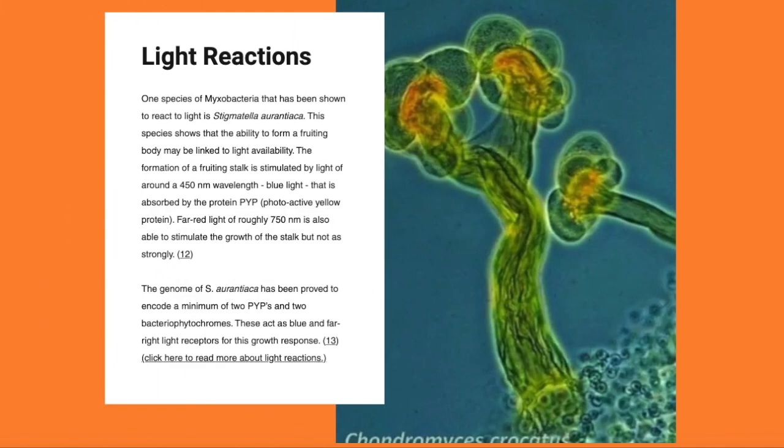Light reactions. One form of myxobacteria that has shown to react to light is Stigmatella aurantiaca. It shows that the ability to form stalks may be linked to light availability. The formation of a fruiting stalk is stimulated by light of around a 450 nanometre wavelength, blue light. This is then absorbed by the protein PYP.